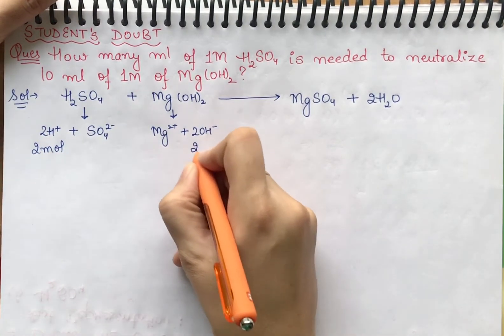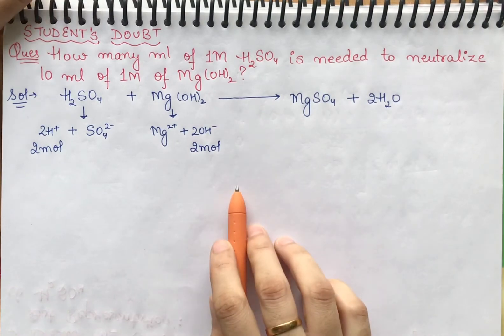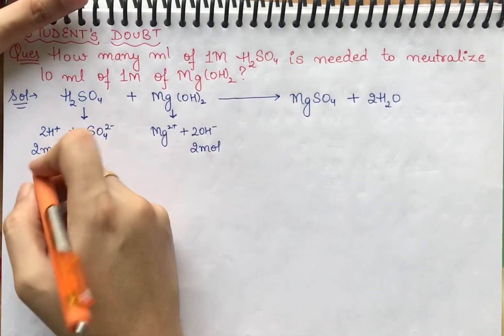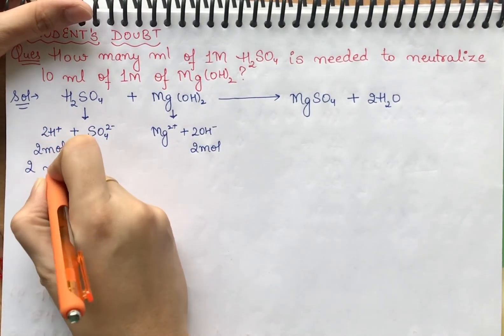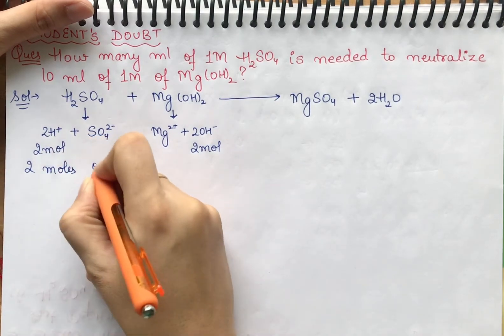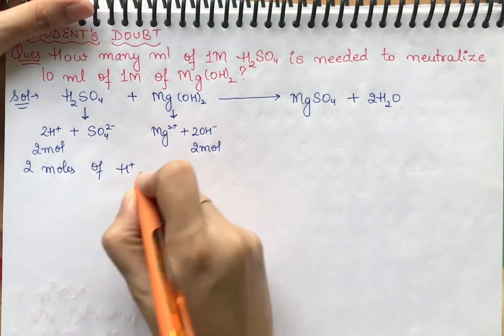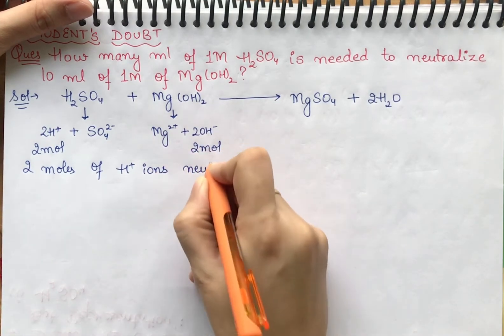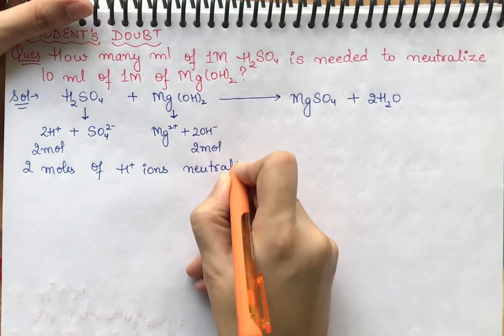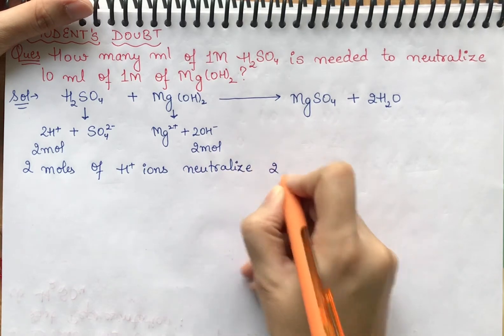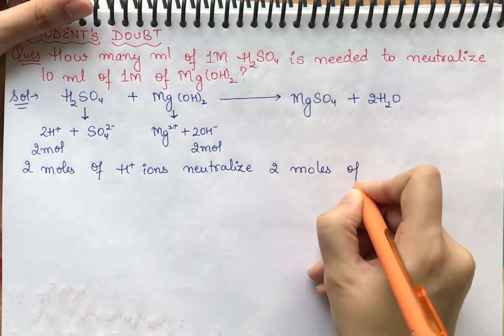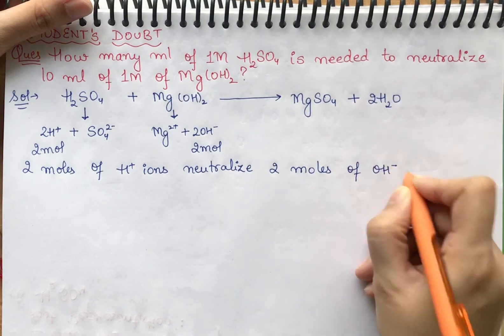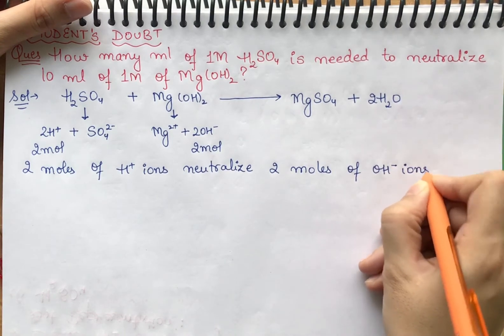with 2 moles of OH- ions. So we can write that 2 moles of H+ ions neutralize 2 moles of OH- ions.